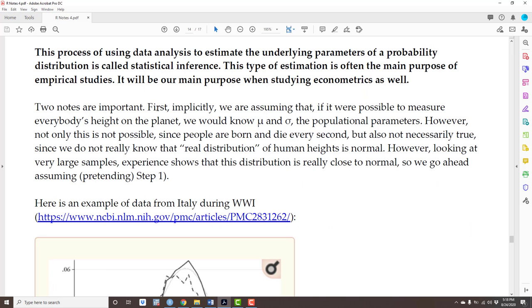Two notes here are important. First, implicitly, we are assuming that if we were possible to measure everybody's height on the planet, we would know μ and σ, the population parameters, which is why they are called population parameters. However, remember, this is not true. We assume it is, but we know it's not, because the real distribution of human heights, for instance, cannot take negative values.